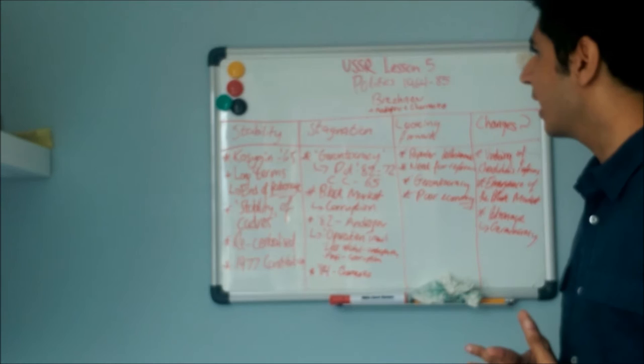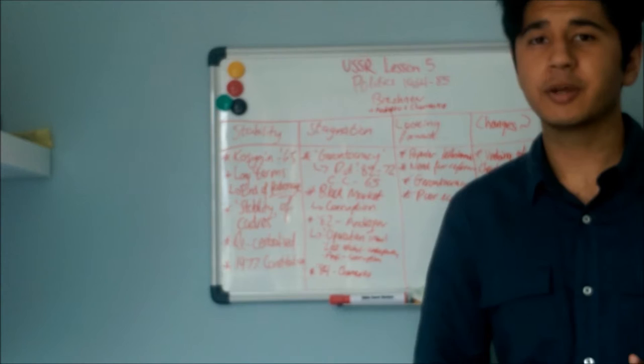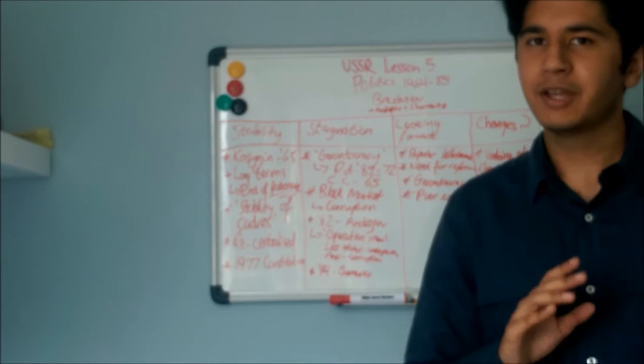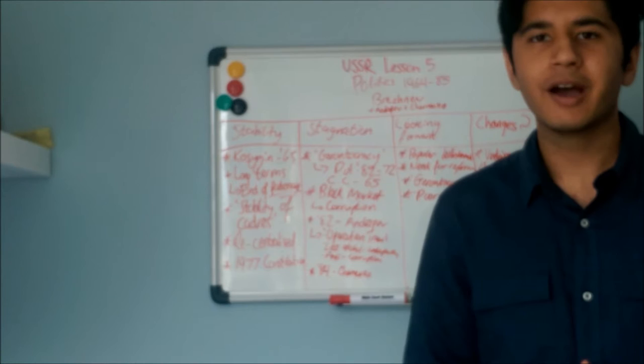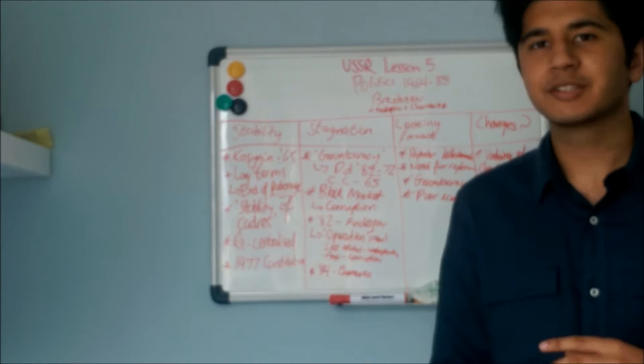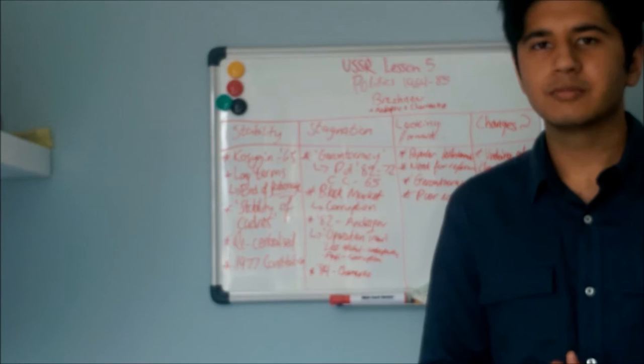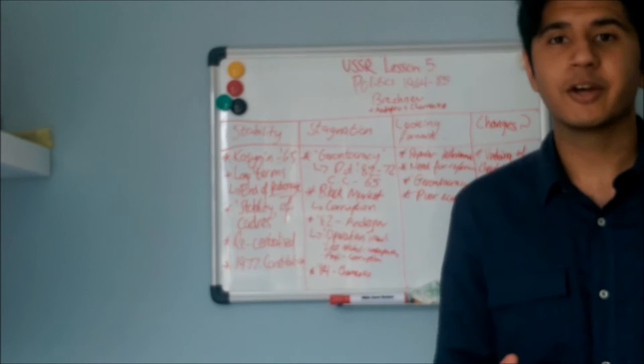Hello. This is the fifth lesson of our history course and the last lesson looking at politics. In this lesson I'm going to go through the time period starting in 1964 and ending in 1985. Quick warning before we start, this is likely to be the most boring lesson. Not much happens under Brezhnev, not only in politics, but in economics and in social aspects and control too. So bear with me and let's try and learn what little there is to learn in this time period.